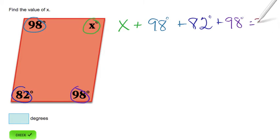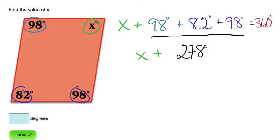Our next step is to add together our three known angles. 98 degrees plus 82 degrees plus 98 degrees equals 278 degrees. So x plus 278 degrees equals 360 degrees.